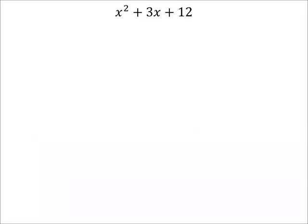There we go. So right here we got x squared plus 3x plus 12. Our b value in this case is 3, so we want the sum to be 3, right? And the c value is 12.